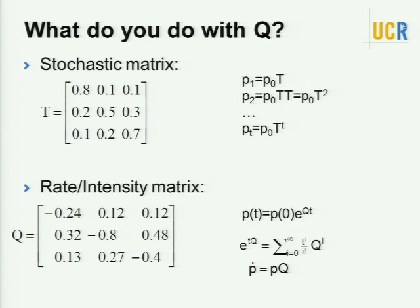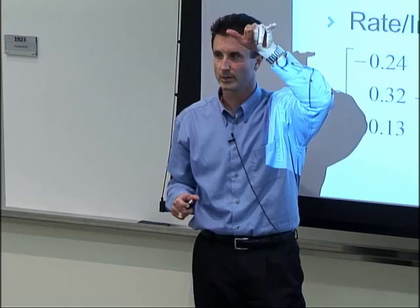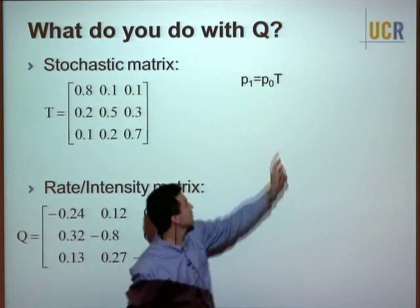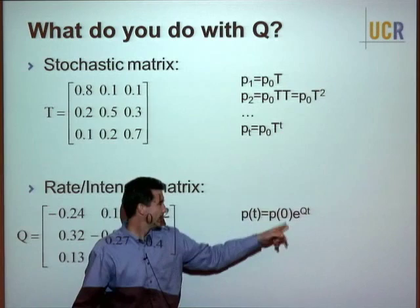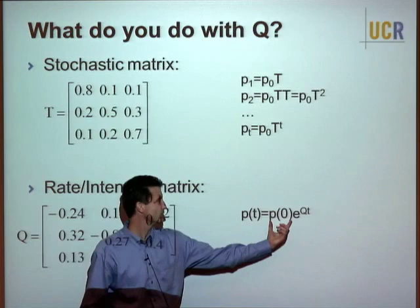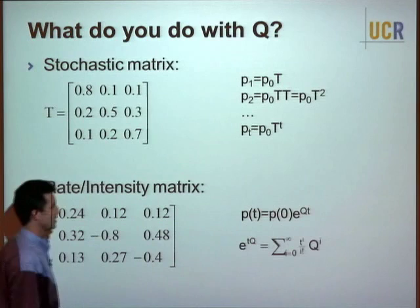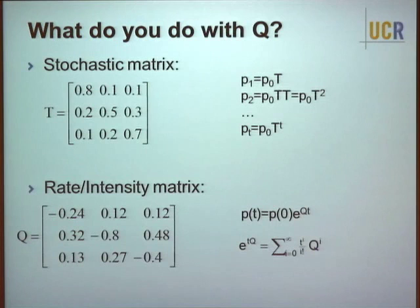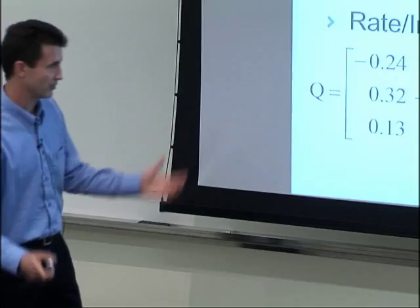A standard question is how to push a distribution forward over time. In discrete time, you multiply the row vector by the transition matrix T. In continuous time, you multiply by the matrix exponential e^{Qt}. The matrix exponential is the solution to the homogeneous differential equation dP/dt = PQ, or equivalently expressed as its Taylor expansion.